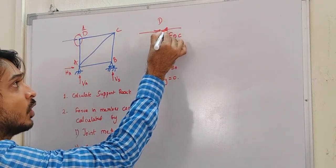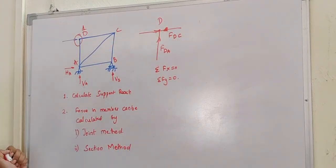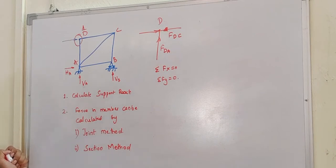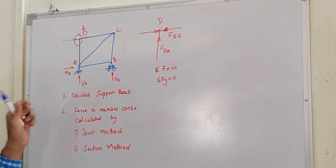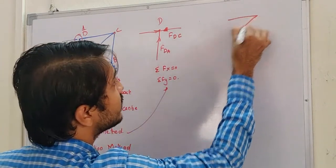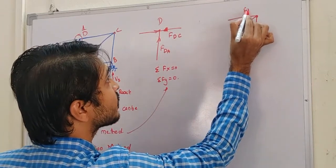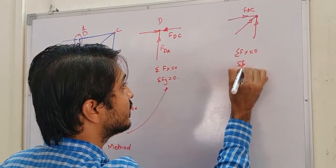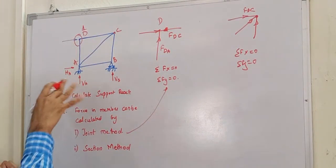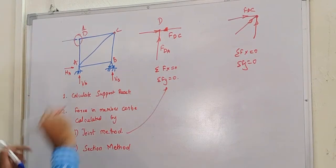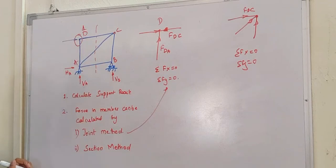In the method of joints, we take all joints one by one. Using already-calculated member forces and assuming unknown ones, we apply ΣFx = 0 and ΣFy = 0 at each joint, continuing until forces in all members are found. In the method of sections, we cut the whole truss into sections and solve; this will be discussed in detail when we deal with that topic.